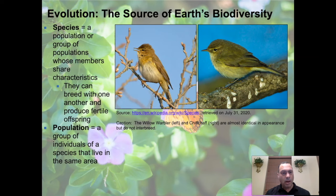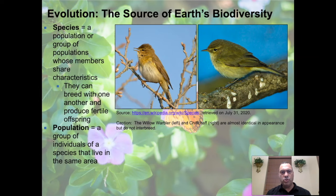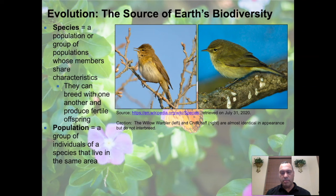A population is simply a group of individuals of a species that live in the same area — a group that can interact, survive together, share a common food source, and reproduce with one another. For example, the warbler and the chiffchaff are two birds that are almost identical in appearance but do not interbreed at all — they are separate species.